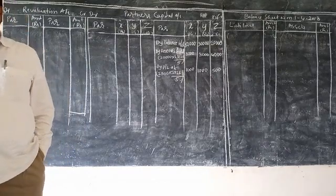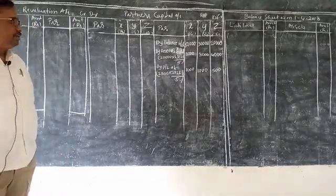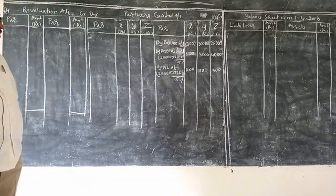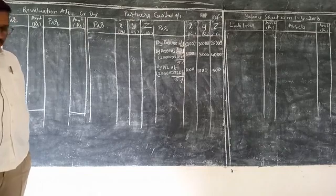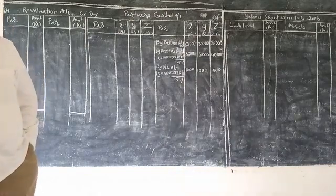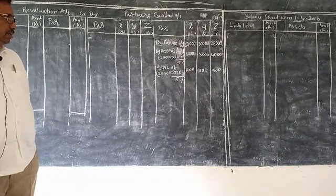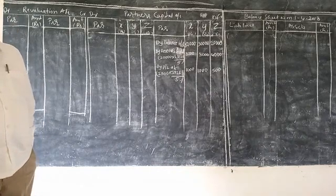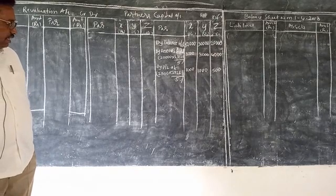First, partners capital account. Opening balance by balance brought down: 50,000, 30,000, 20,000. Reserve fund 20,000, so in old ratio 8,000, 8,000, 4,000. P and L account balance 2,500, in 2 to 2 to 1 ratio: 1,000, 1,000, and 500.